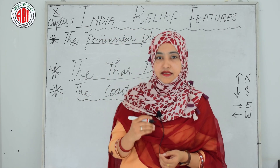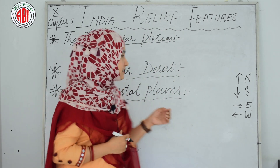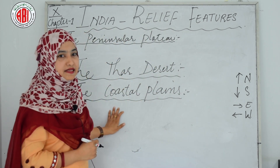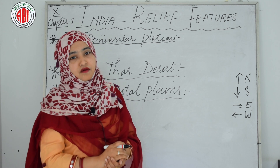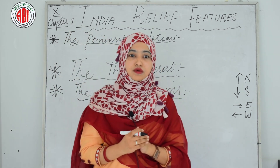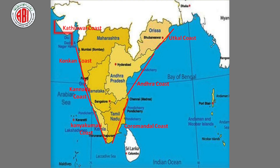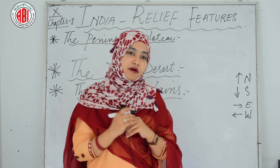Next we go to the relief feature of coastal plains. The southern part of the Peninsula Plateau is bordered by narrow coastal strips along the Arabian Sea on the west and the Bay of Bengal on the east. The western coast starts from the Rann of Kutch and ends at Kanyakumari. It is narrower than the east coast, and the plain is unbroken by hilly terrain. It can be divided into three parts.